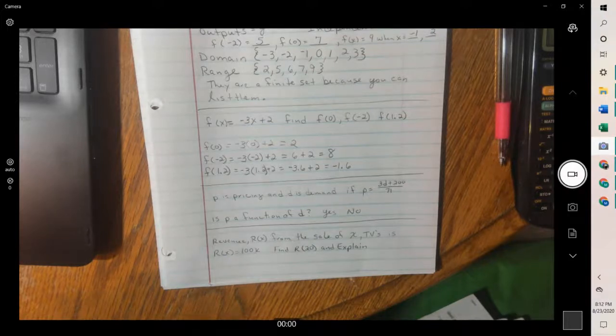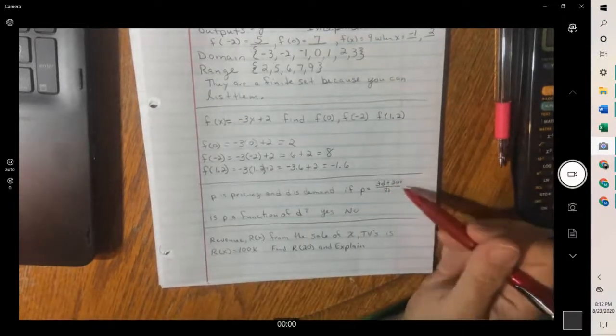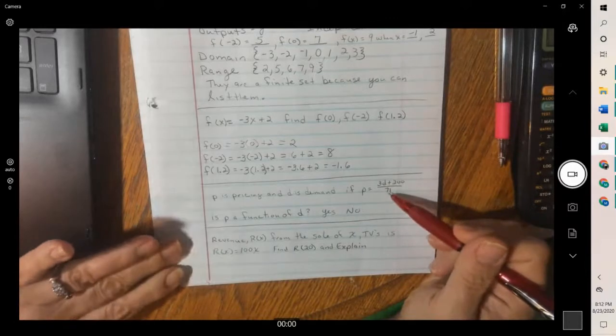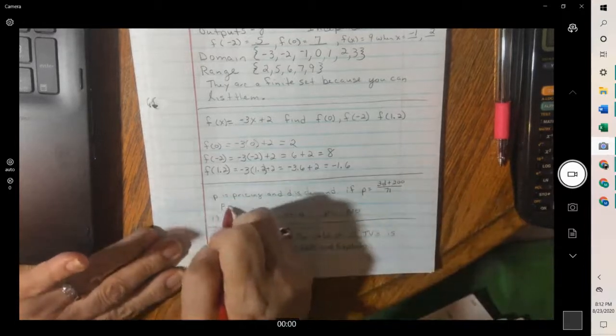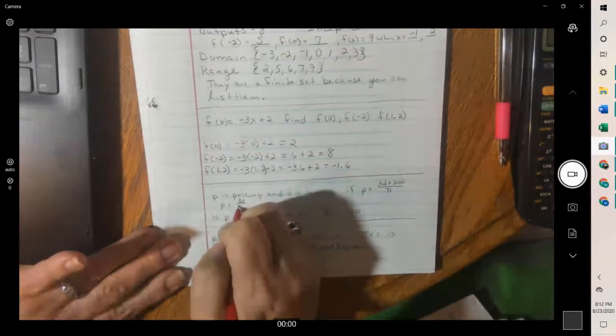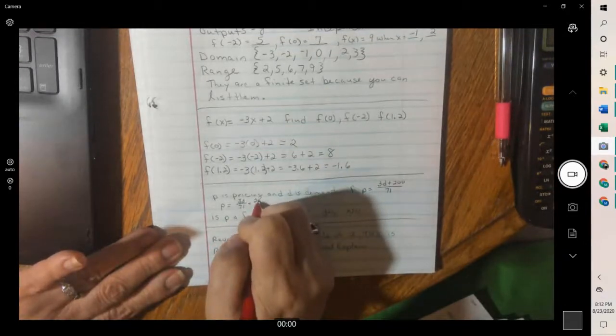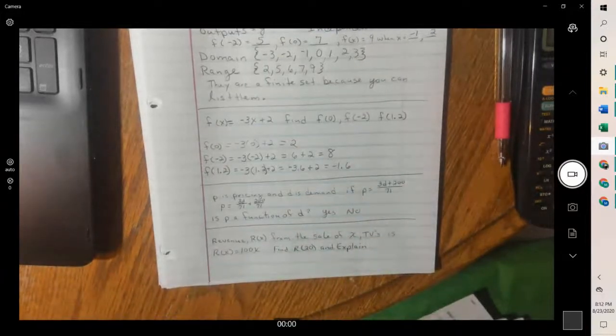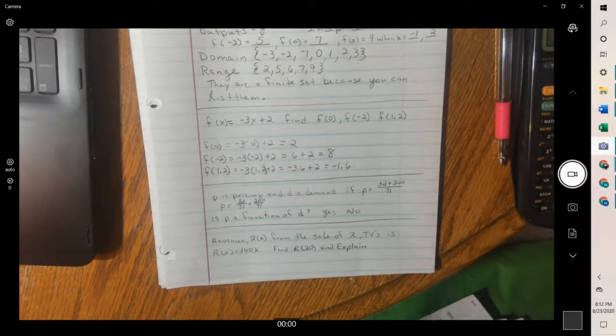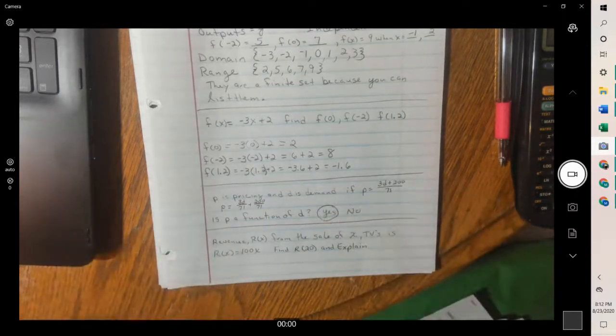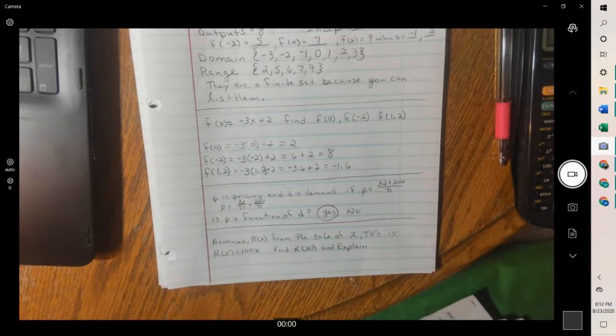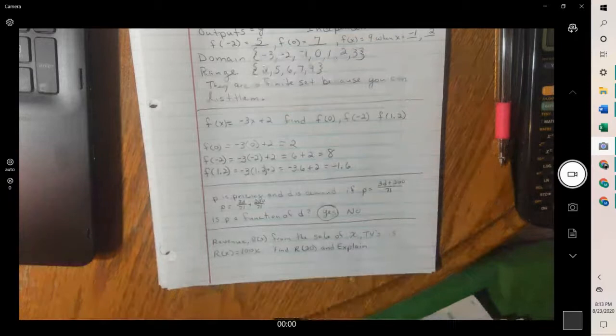To decide one way of doing it, you could plug a bunch of numbers in. But we can see when we plug in any number here, we're only going to get one possible answer. But we could also, because there's one value in the denominator and two in the top, this could be rewritten. So that's a function, p equals 3d over 71 plus 200 over 71. That makes that linear because the d and the p are both to the first power. So this is just a straight line.